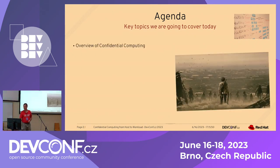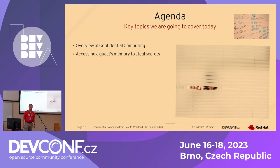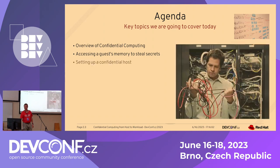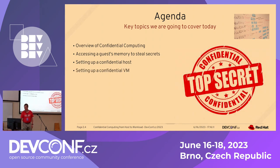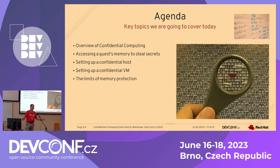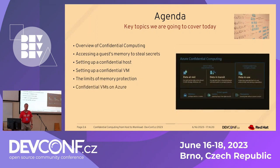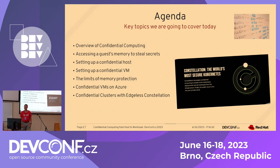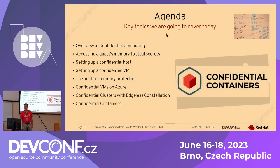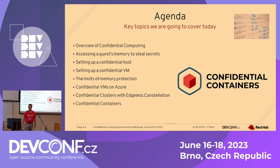What we are going to cover today: first, a quick overview of confidential computing — a repeat for folks who were there this morning. Then we'll show how to access guest memory to steal secrets. We'll set up a confidential host, which is extremely simple. Then we'll set up a confidential VM. We'll discuss limits of memory protection, confidential VMs on Azure, confidential clusters with Constellation, and there's a workshop on Sunday for confidential containers.